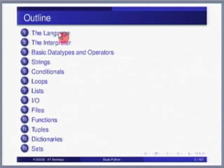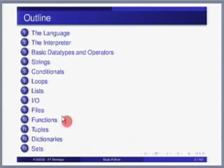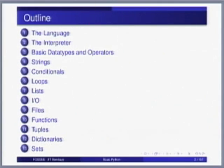I will now recap what we did last class. I covered the language in the basic interpreter and stopped just before starting basic data types. I will redo these slides very rapidly, in less than five minutes, then get to the main content. Broadly we will cover basic introduction to the language, basic data types and operators, strings, conditionals, loops, lists, input and output, file handling, basic functions, and more advanced data structures like tuples, dictionaries, and sets. After finishing this material, we will move to object-oriented programming and the standard library.